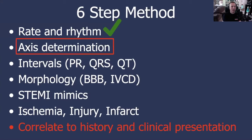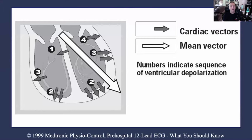Let's move on to axis determination. We're talking about the heart's electrical axis in the so-called frontal plane. We're referring to the heart's depolarization wavefront, or the so-called mean electrical vector. We know the heart is an electrical organ, and it beats in response to an electrical signal that it itself generates. As this heart depolarizes and these millions of myocytes inside the myocardium depolarize, if you average them and ask what is the main direction of this depolarization wavefront...